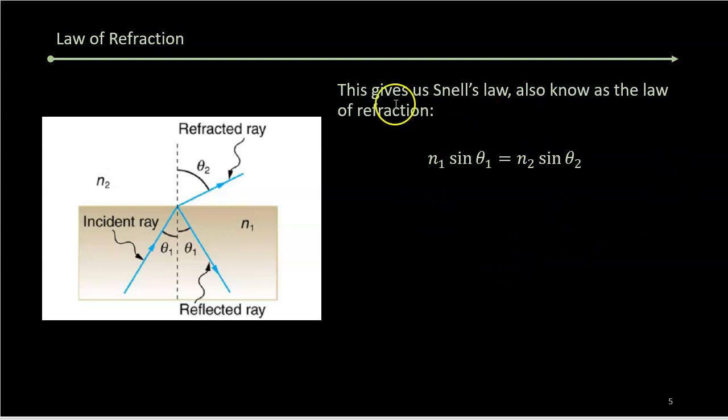Snell's law basically says if you take the index in material one, n₁, and you multiply it by the sine of this angle θ₁—the angle that the incident ray is coming in at, is traveling at with respect to this perpendicular—